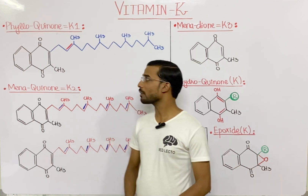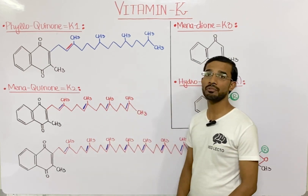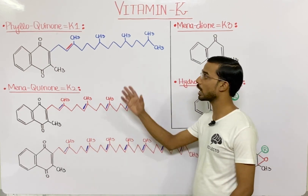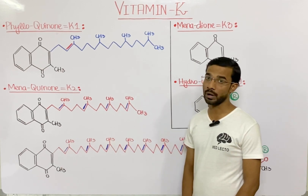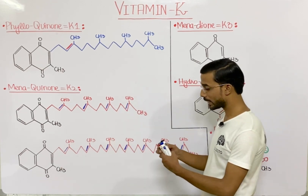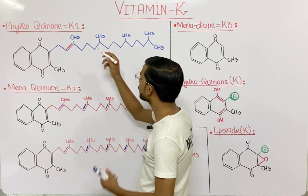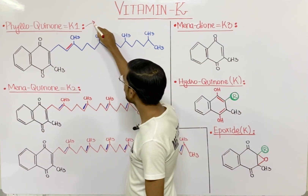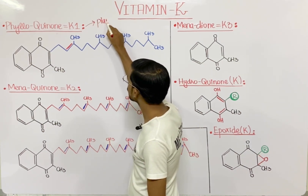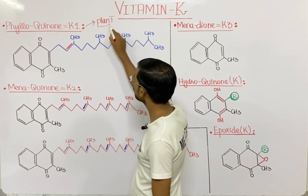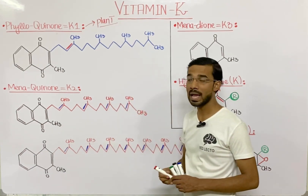First of all we are going to discuss phylloquinone, that is actually called vitamin K1. This form of the vitamin is basically from a plant source. That's the most important thing.